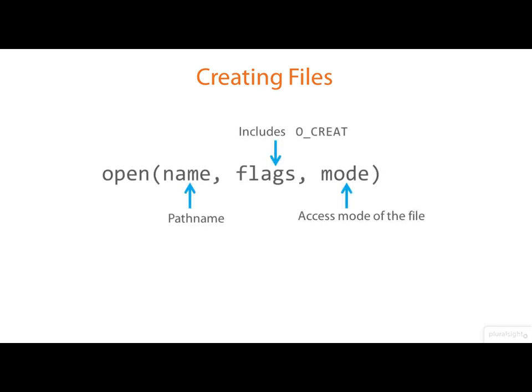Looking through the eyes of a Linux systems programmer, files are most often created as a sort of side effect of the open call, where we include the O_CREAT flag and specify the initial mode of the file. The file is created along with the link. There's also a system call called creat, which simply creates files and links.